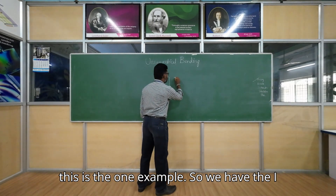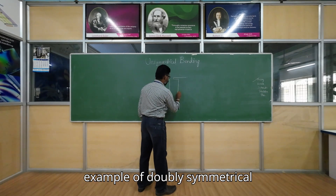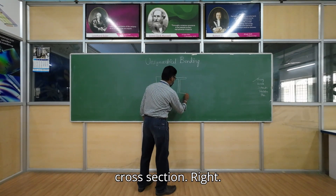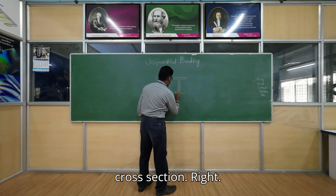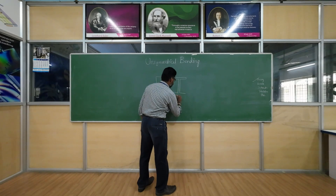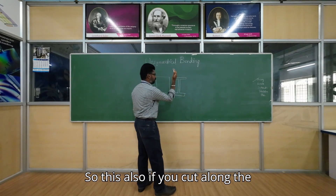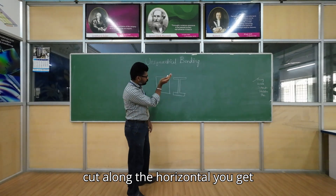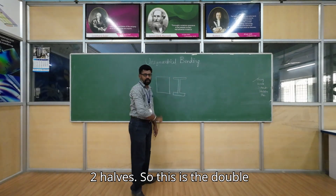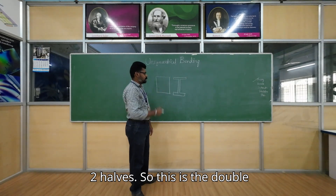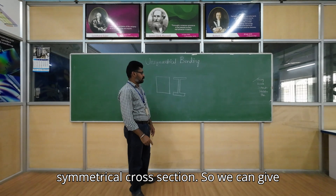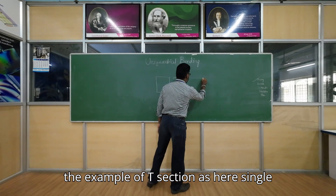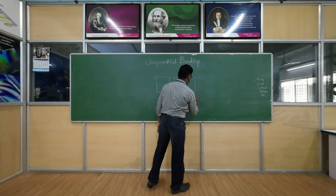An I-section is another example of a doubly symmetrical cross section. If you cut along the vertical axis you get two halves, and if you cut along the horizontal axis you also get two halves. A T-section is an example of a singly symmetrical cross section.